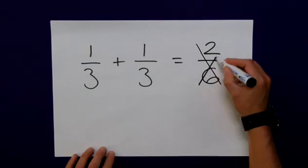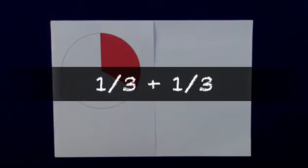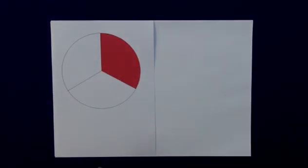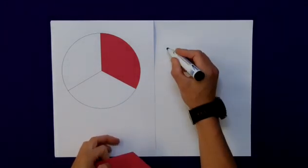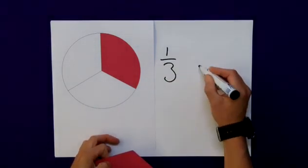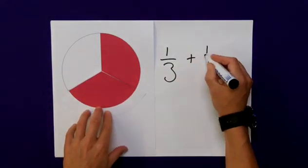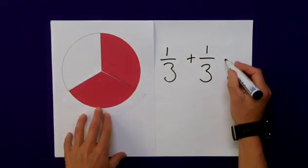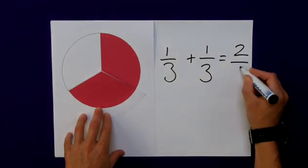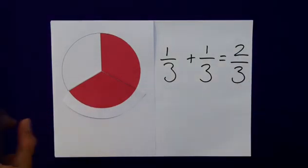When clearly that isn't correct. If possible, I try and give them a picture representation of what we're trying to do. Here we have our 1 third added to another third. And hopefully from the diagram, they can see that that is actually 2 thirds and not 2 sixths as before.